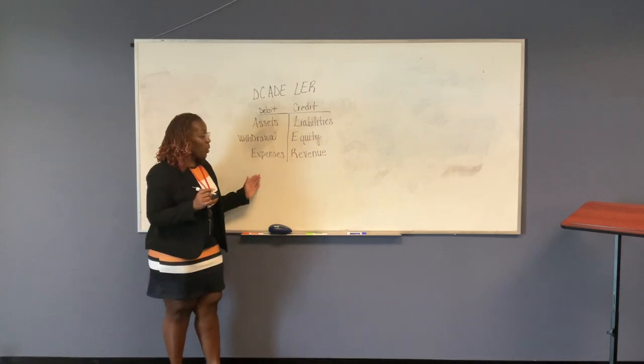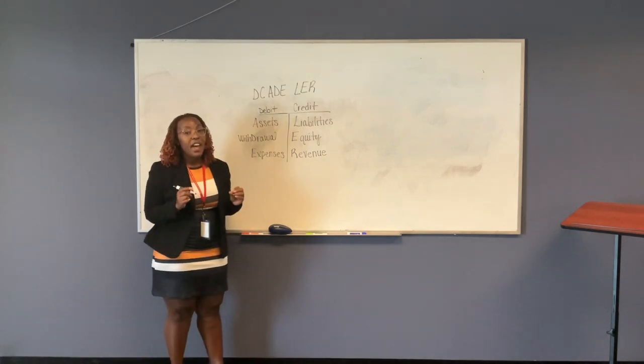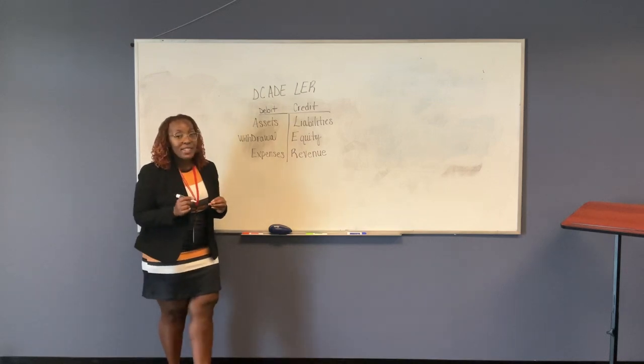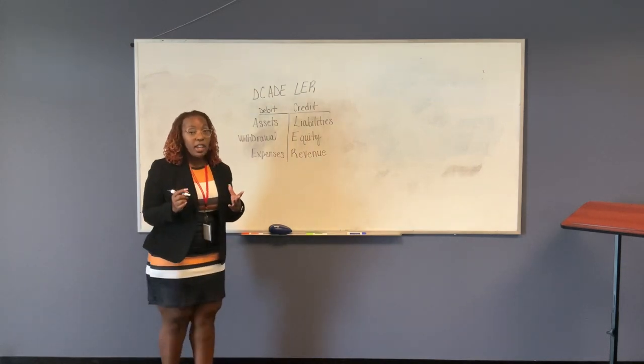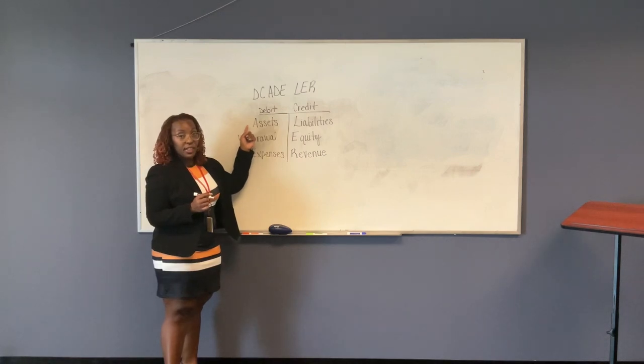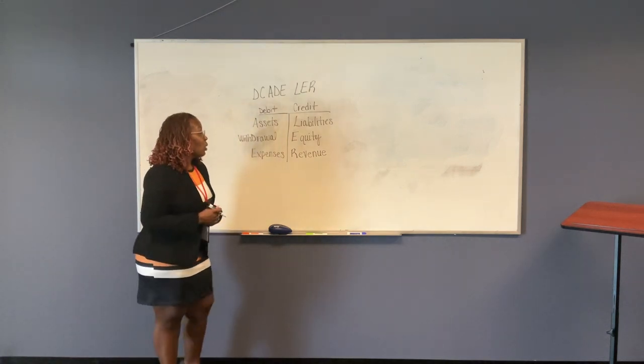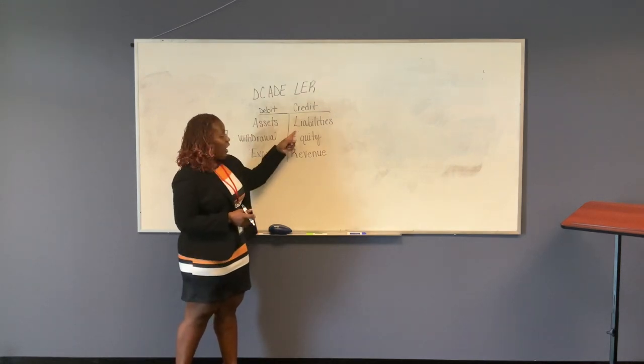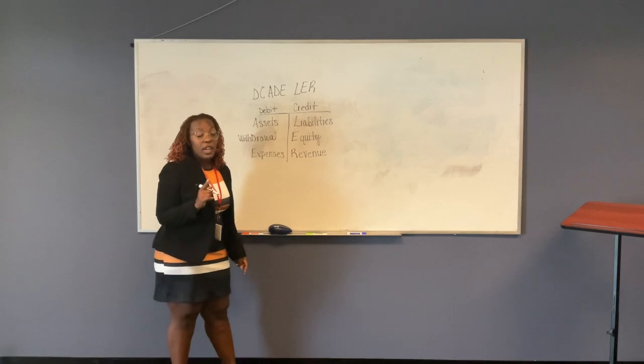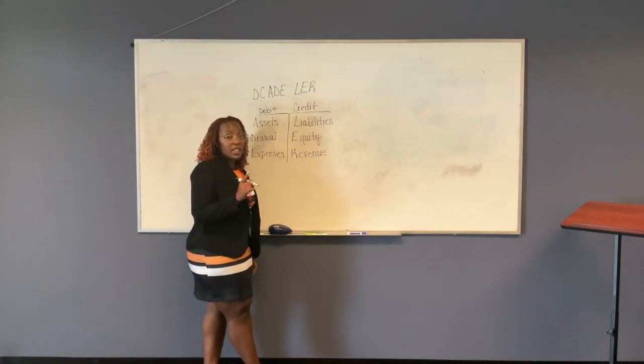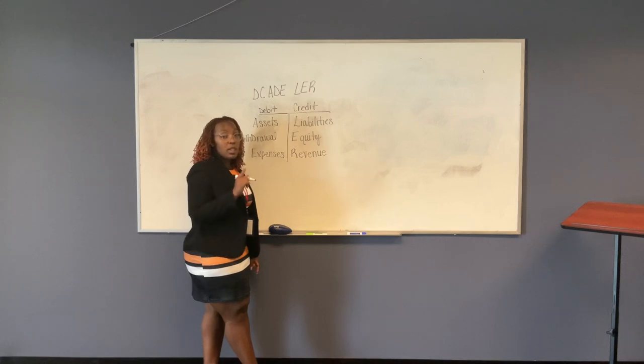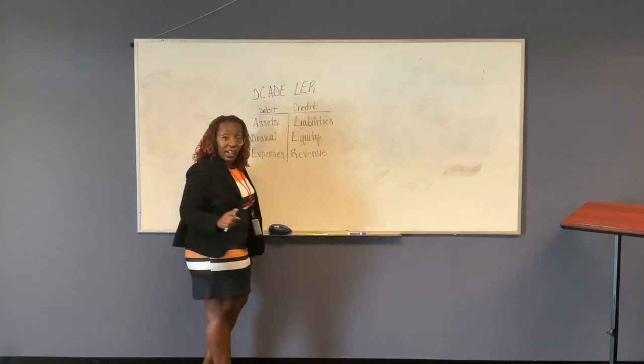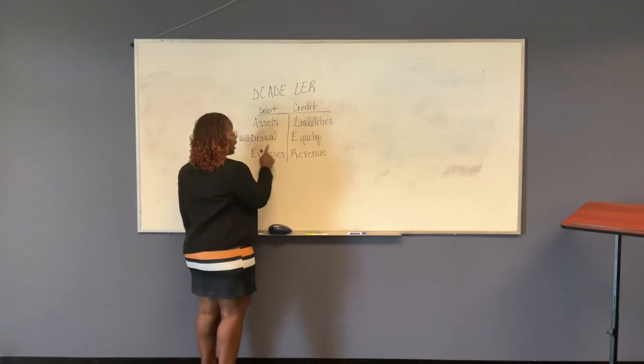So if I ask you what would make an asset increase? Your answer would be a debit. If I ask you what would make a liability increase? Your answer would be a credit. Now, it is also vice versa, which means if I ask you what would decrease an asset, a credit. What would decrease a liability, it would be a debit.